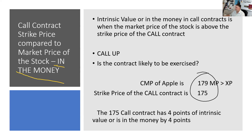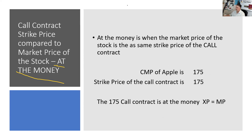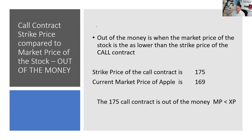In the money and intrinsic value are synonymous terms. The second relationship is at the money—that's when the strike price and the market price are one and the same. So if Apple's trading at 175 and the strike price is 175, that contract is at the money. The last relationship is out of the money. Investors aren't in, out, or at the money—that applies to contracts. There's no such thing as negative intrinsic value; it either has it or it does not.